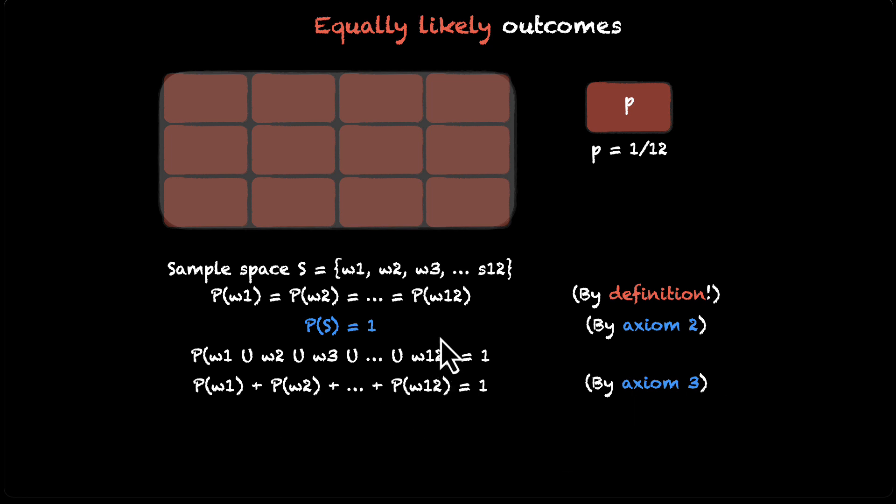All these probabilities are equal. Let's say that that value is p. So we have 12 p's, all of them adding up to 1. So 12 p is 1 and that means p is equal to 1 by 12. So your intuition was right. The probability is 1 by 12, but this is how you prove it using the axioms that we have discussed.